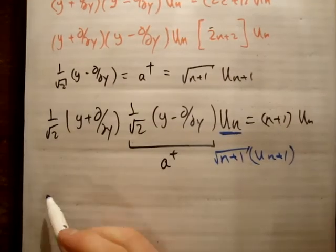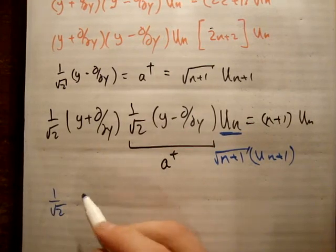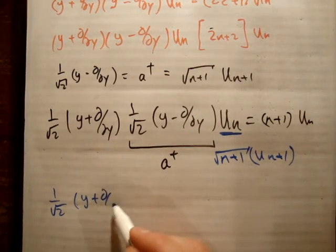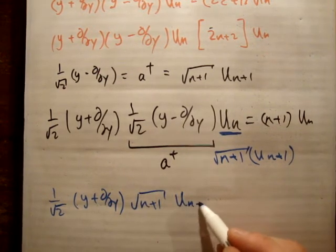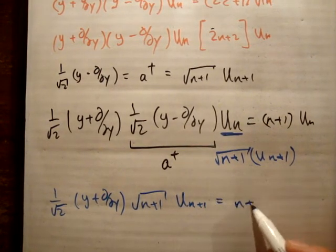Okay, so now what we can write is, we have 1 over root 2, y plus d/dy, times root n plus 1, times UN plus 1, equals n plus 1 times UN.